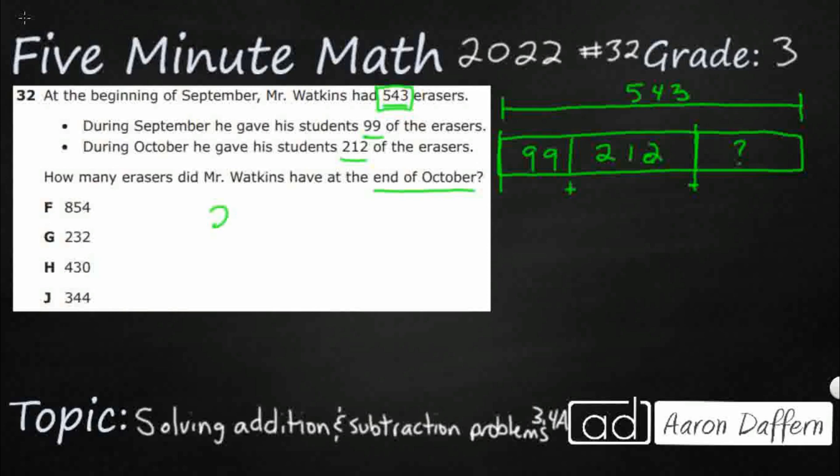So here's just the standard algorithm, right? Standard algorithm means we just line it up. We add it, carry, all of that. So let's just try that. So 9 and 2 is going to be 11. And that's going to be 10, 11. All right. So that's 311.